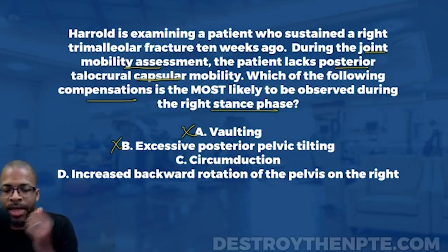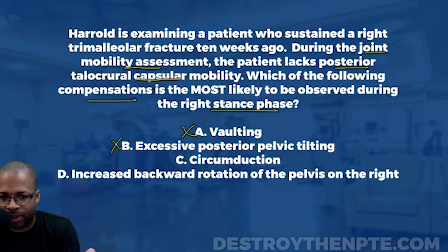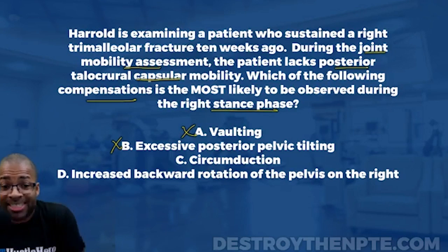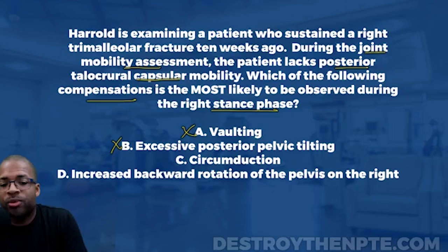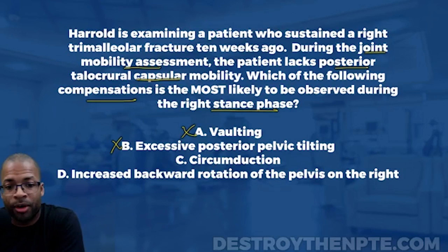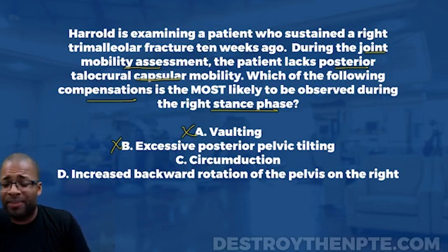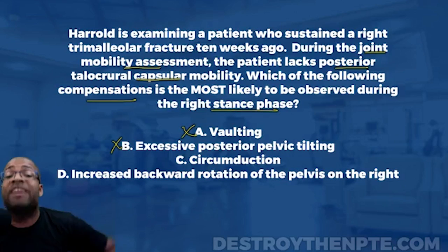Our patient lacks dorsiflexion, which means their hip cannot go back very far. We need a compensation that still allows the hip and leg to go back further. Posterior pelvic tilting does not do that — it keeps the leg from going back. But if you anteriorly tilt the pelvis, it lets the leg go back further. So B cannot be the answer.